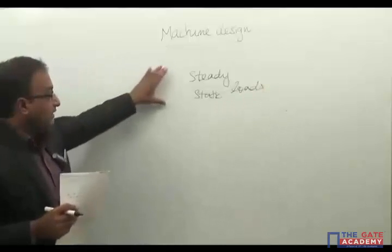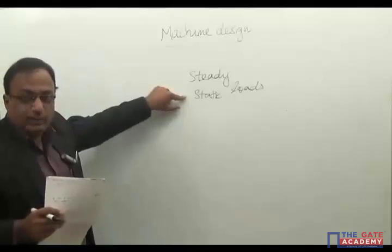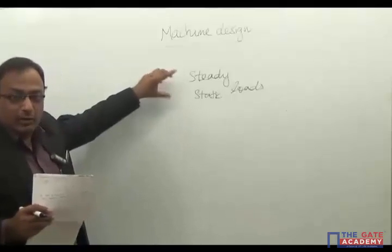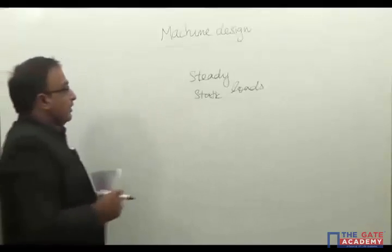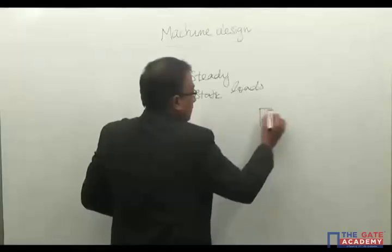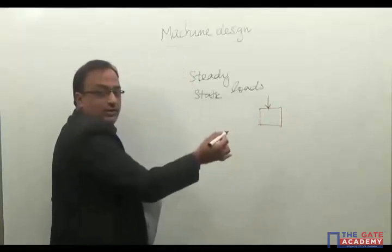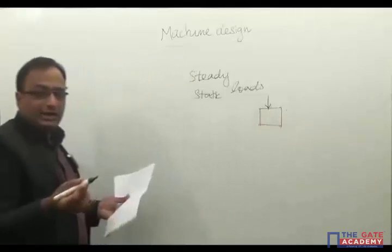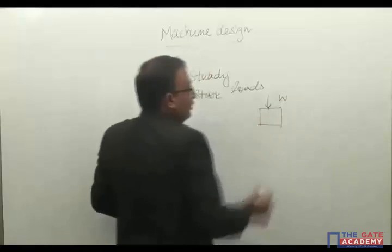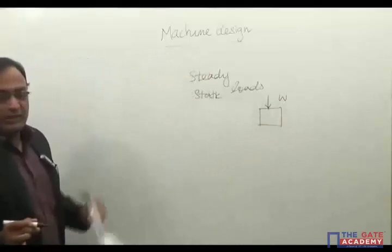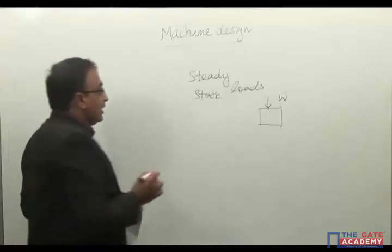The first type is steady load or static load. This means the load is statically or steadily applied on a body such that the magnitude of the load remains constant — it does not vary with time. The load W remains constant regardless of whether it is compressive, tensile, or shear. This is known as a steady or static load.